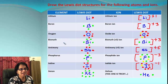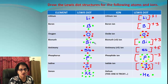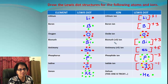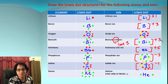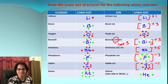Bismuth has five valence electrons because it's in group number 15. When bismuth forms a Bi³⁺ ion, it is losing three electrons — that gives a positive three charge. Out of five electrons, three are gone, so two electrons remain around bismuth.